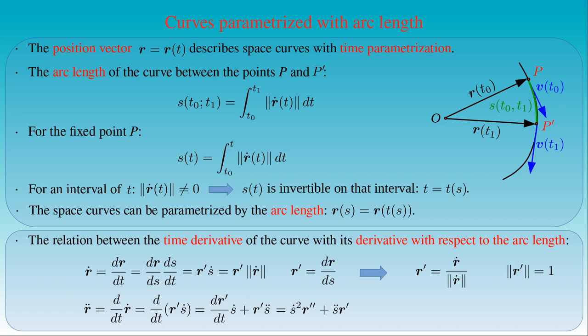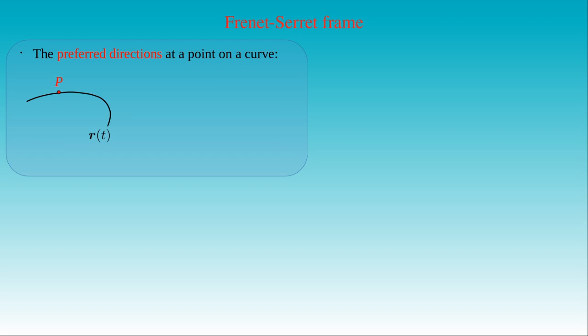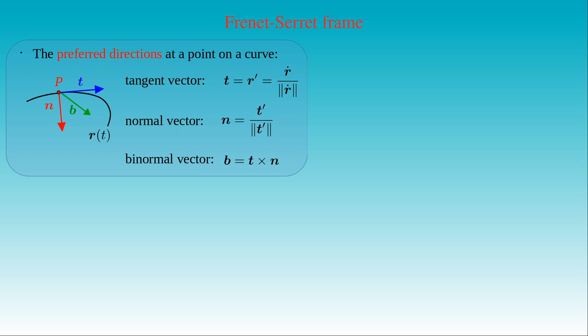Now we have expressed the first and second-order time derivatives of the position vector in terms of its derivatives with respect to the arc length. We will use these expressions to construct a set of basis vectors attached to the moving body — the Frenet-Serret frame, named after the two French mathematicians and physicists who introduced it. To construct such a frame, we ask: what are the preferred directions in space at a given point P of a curve r(t)? The answer is based on the shape of the curve. One preferred direction is the unit tangent T at P, the derivative of r with respect to arc length. The second preferred direction is the normal vector N, the normalized derivative of the unit tangent. We will demonstrate that N is perpendicular to T. The last preferred direction is the binormal vector B, defined as the cross product of T and N, which is perpendicular to both T and N.